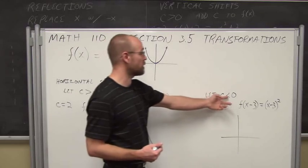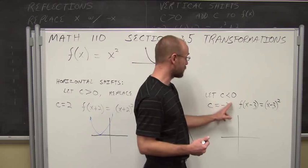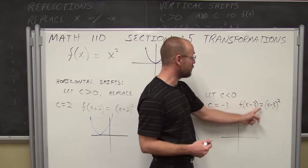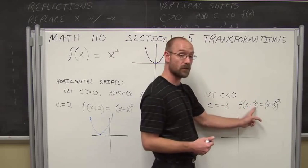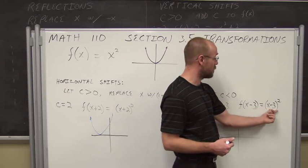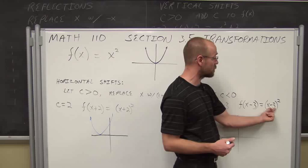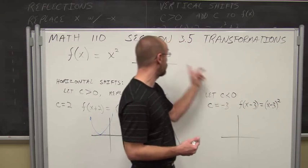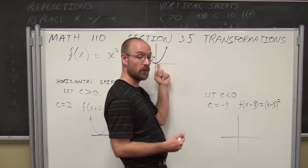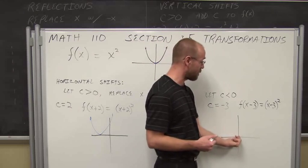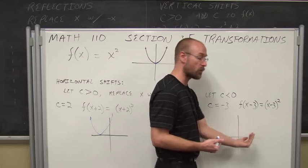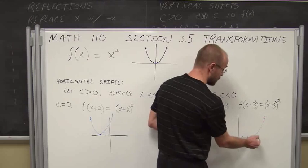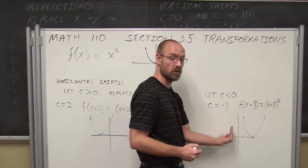What happens if c is less than 0 — a negative number? Let's allow c to be negative 3. So I'm going to evaluate the function for f of x minus 3, which gives x minus 3 quantity squared. Think of it as: what would I have to do to x to get it back to the origin? I'd have to have x be a positive 3. So it essentially shifts the graph to the right three spots — 1, 2, 3 — and then it's the same exact shape as our library function, just shifted over 3.